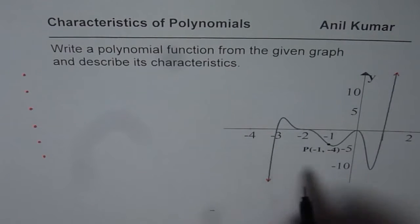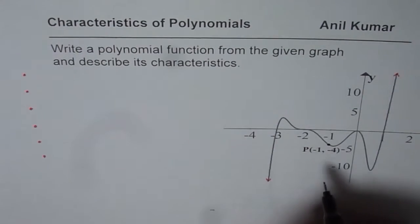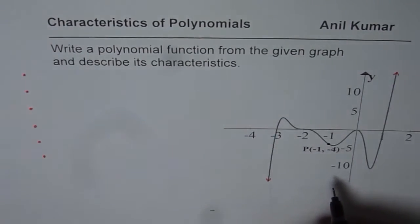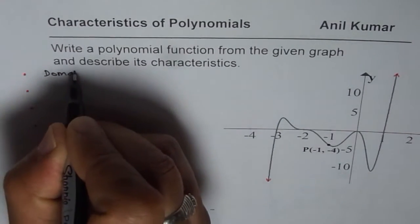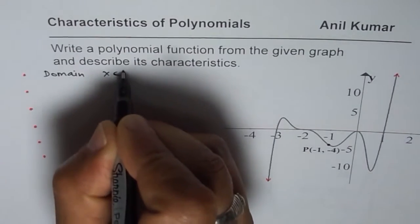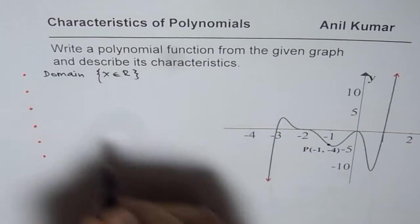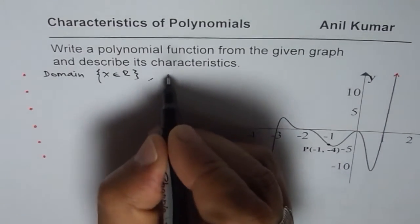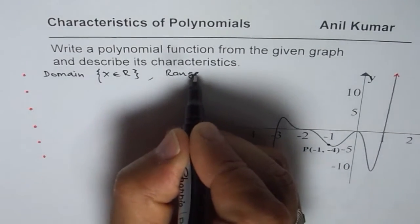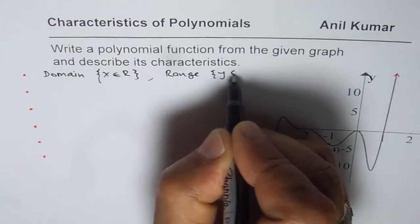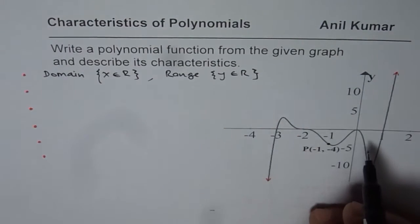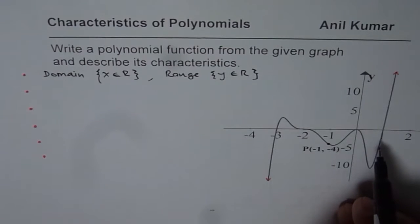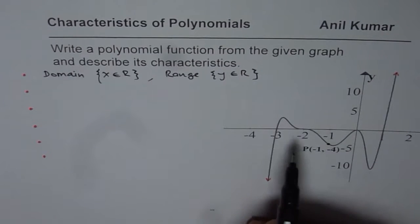Now, domain and range is something which is a good characteristic to start with. So we know domain in this particular case is x belongs to real numbers. And in this particular case, range is y belongs to real numbers. So there are no restrictions. Polynomials have smooth curves as it is shown here.